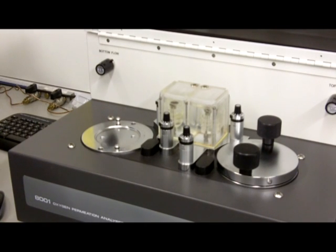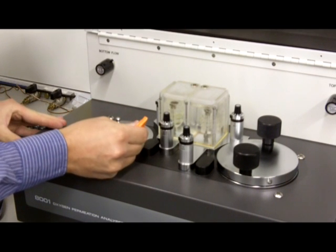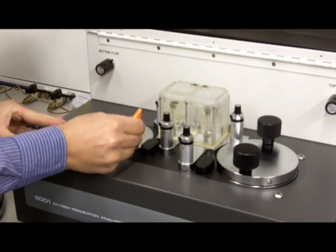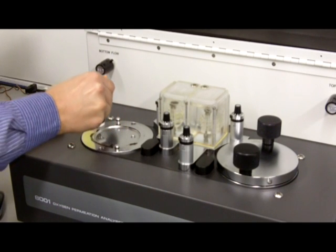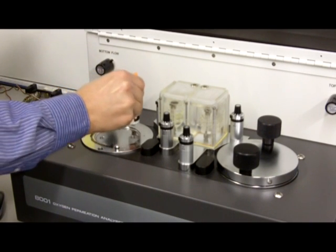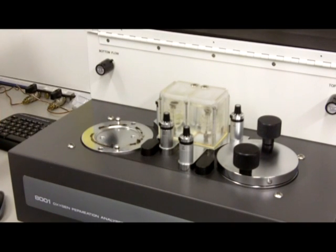We then apply grease for an airtight seal. Smooth it around the chamber edge.